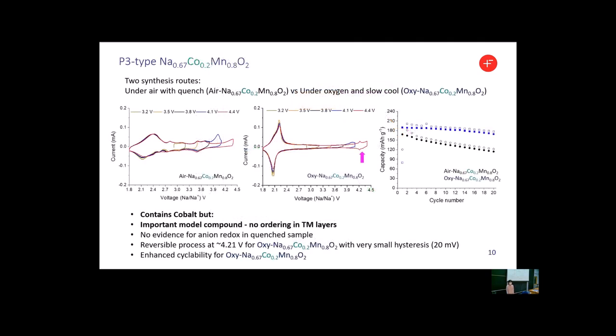The second material is 20% cobalt-doped sodium manganese oxide. Again, two samples were prepared as the same method as magnesium-doped samples. Although this compound contains cobalt, it's still worthy to investigate as a model compound that has no ordering in transition metal layers.